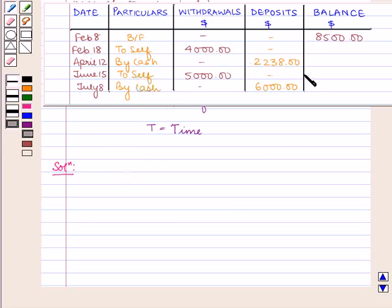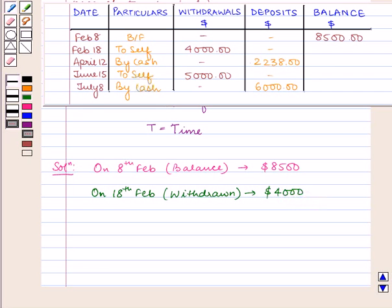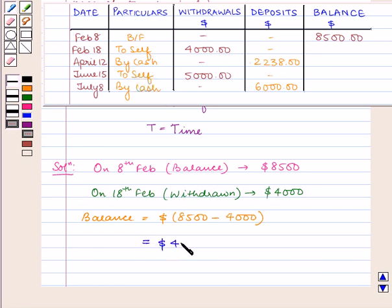First we shall complete the given table. On 8th February the balance amount is 8500 dollars. On 18th February an amount of 4000 dollars is withdrawn, so the balance amount is 8500 dollars minus 4000 dollars, which is equal to 4500 dollars. So the next entry in the passbook is 4500 dollars on 18th February.